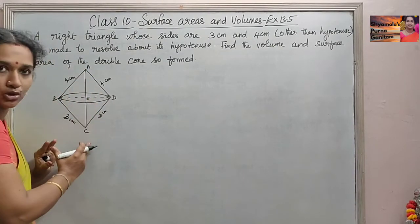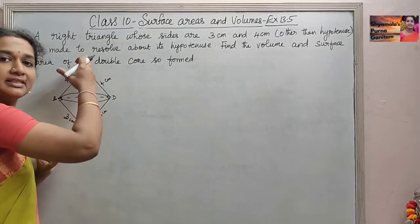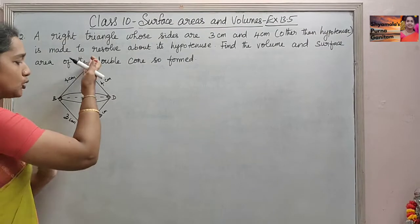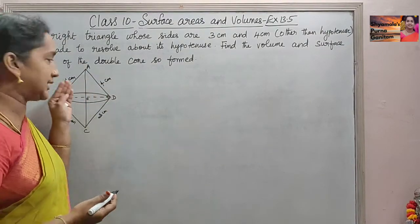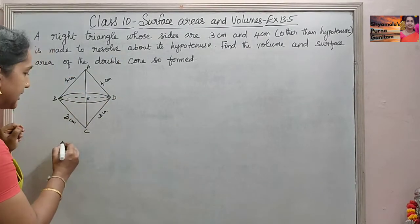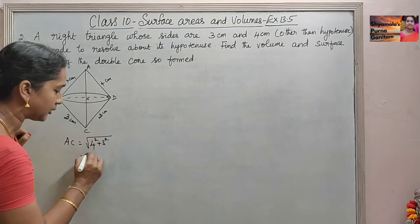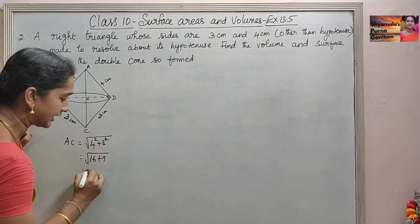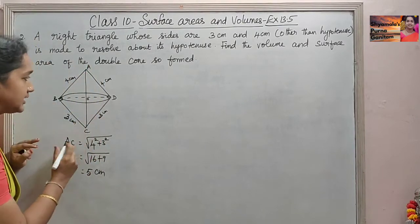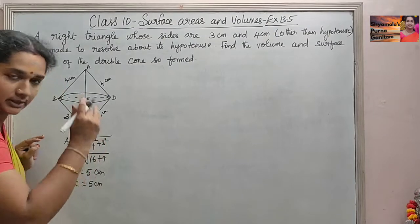The total height of the double cone will be AO plus OC, which equals the full length AC. Using the Pythagorean theorem, AC = √(4² + 3²) = √(16 + 9) = √25 = 5 cm. So AC = AO + OC = 5 cm is the height of the double cone.